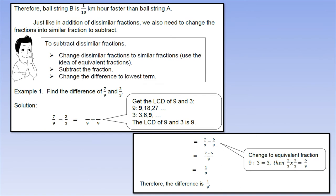Based on the answer, ball string B is 1/10 kilometers per hour faster than ball string A. Just like in addition of similar fractions, we also need to change the fraction into similar fractions to subtract. I said earlier we can't subtract fractions if they don't have the same denominator. How do we make their denominators the same? Simple. We need to find the least common denominator, LCD. How do we find their LCD? Simple again. We list the multiples of the numbers and find the smallest common multiple. Automatically, that's the LCD. To subtract similar fractions, I have an example here: Find the difference of 7/9 and 2/3.